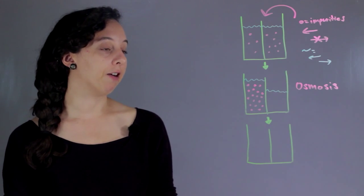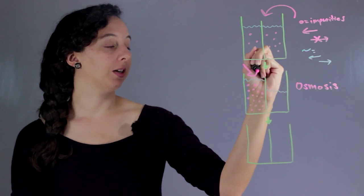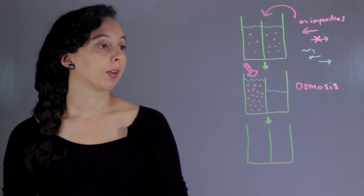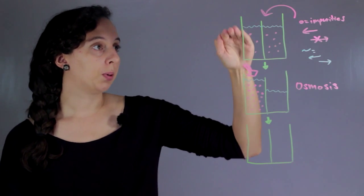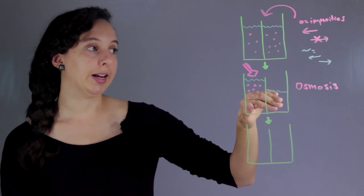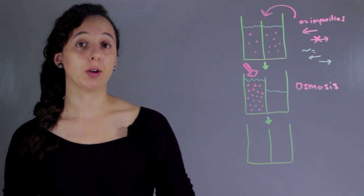So if we now apply a force either by just pressing down on it or maybe gravity then we can push the water down and it'll scoot back to the right hand side because water can go both ways and all of the impurities will still be trapped.